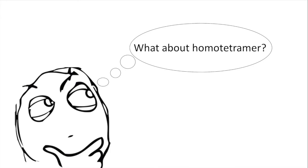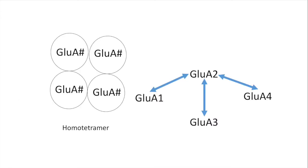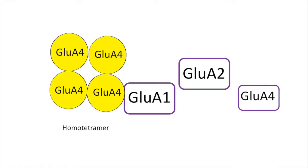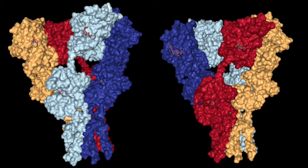But what about homotetramer? For homotetramer, the rules are a little different. You don't see homotetramers of GluA3 in nature. However, you do see homotetramers of GluA1, 2, and 4. This concludes the aminoterminal domain.